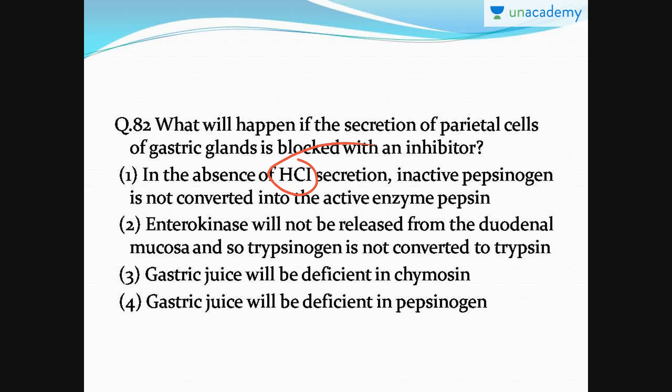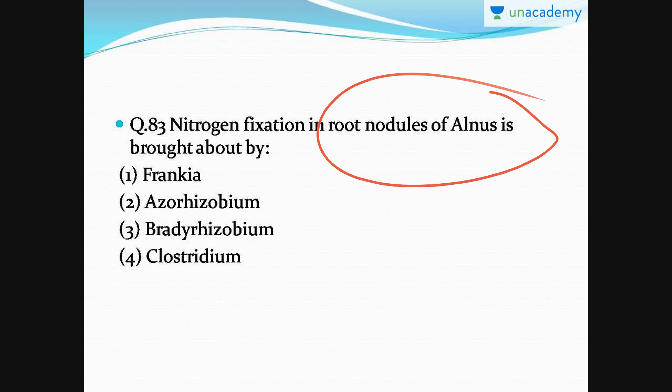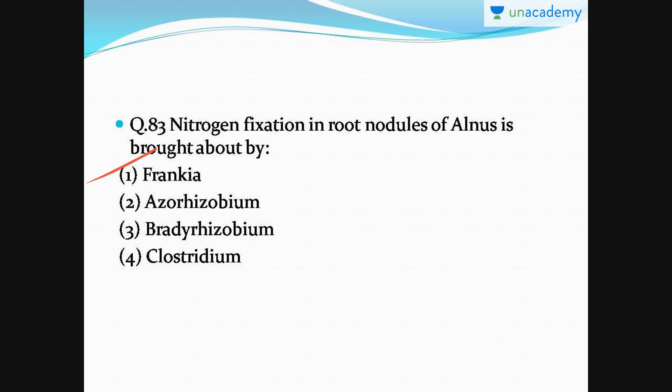Next question: nitrogen fixation in root nodules of Alnus is brought about by — the right answer is option number one. In the root nodules of Alnus, nitrogen fixation is done by Frankia. Remember, the nitrogen fixation topic is very important — please learn all the plants and the bacteria or organisms which carry out nitrogen fixation, as well as the nitrogen fixation cycle. Don't skip this topic.